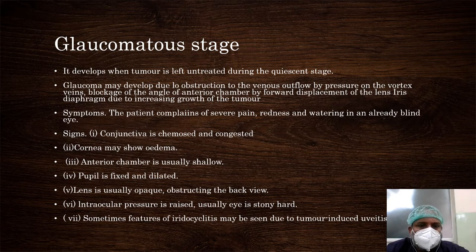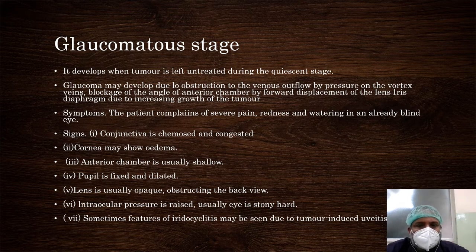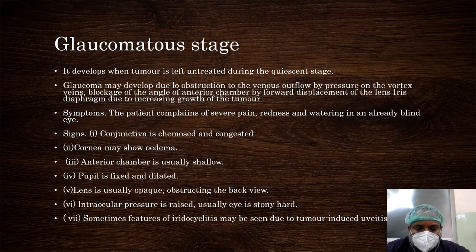Next is the glaucomatous stage. Due to narrowing of the venous outflow, pressure on the vortex veins, and blockage of the angle of the anterior chamber by forward displacement of the tumor or iris-lens diaphragm, the patient may develop glaucoma. The patient complains of severe pain, redness, watering, and a blind eye. On examination, the conjunctiva is congested, there is corneal edema, the anterior chamber is shallow, the pupil is mid-dilated, and the lens is usually opaque. It resembles an acute attack of congestive glaucoma.